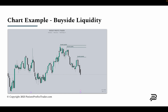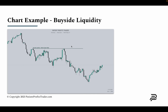For buy-side liquidity, we have a swing high here, a swing high here, and another swing high here. Anyone that went short at these highs has their stop loss resting above — buy stop orders, or buy-side liquidity. We also have relatively equal highs. Anyone that sold from here down has their stop loss resting above those equal highs — buy stop orders, or buy-side liquidity.